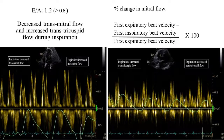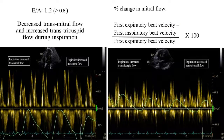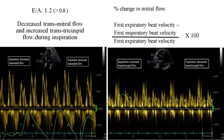To calculate the percentage change: the percent change in mitral flow equals the first expiratory beat velocity minus the inspiratory beat velocity, divided by the first expiratory beat velocity, multiplied by 100. If the percent change in mitral flow is more than 25%, or if the percent change in tricuspid flow is more than 40%, you have to suspect constrictive pericarditis.